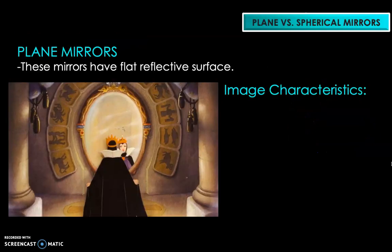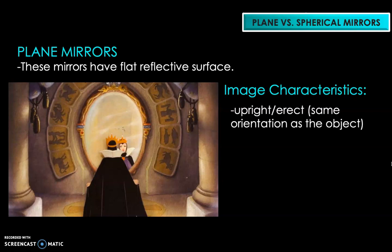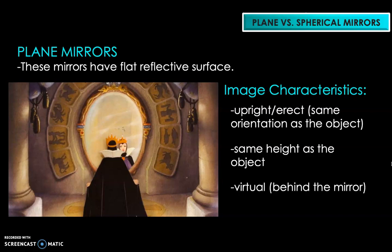Plain mirrors are mirrors that have a flat reflective surface and they form images that are upright, same height as the object, and are virtual.